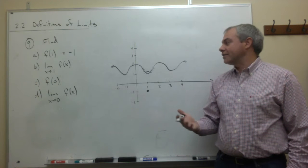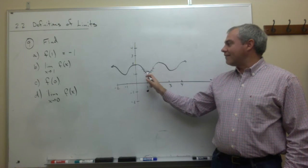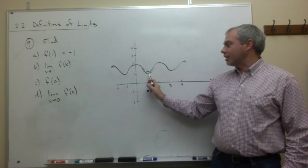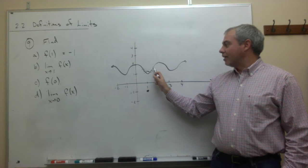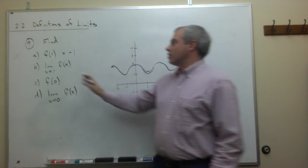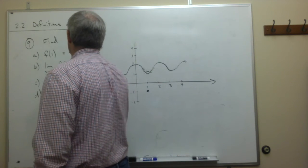As I come from the left and as I come from the right, the y values are getting close to something. They're getting close to 1, even though this point isn't actually there. So the limit as x goes to 1 of f of x is 1.